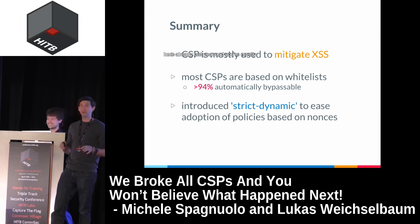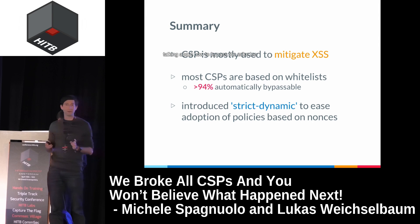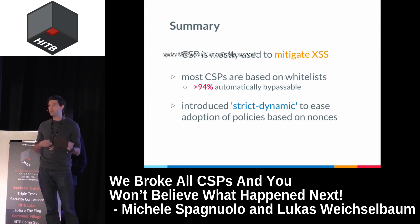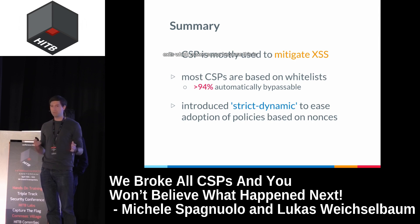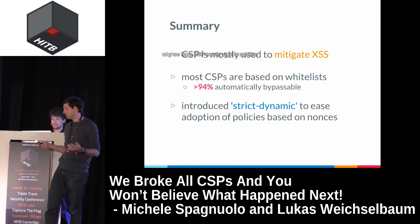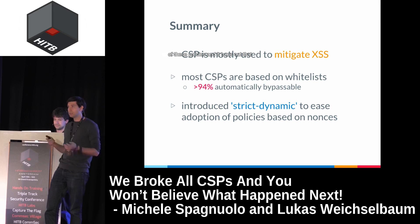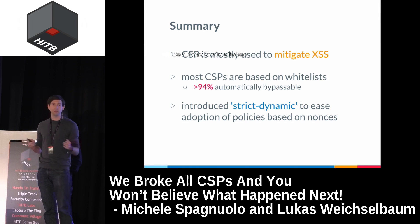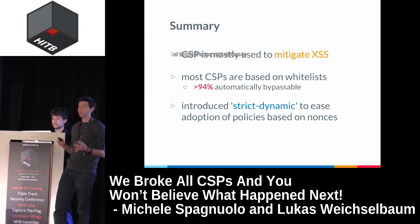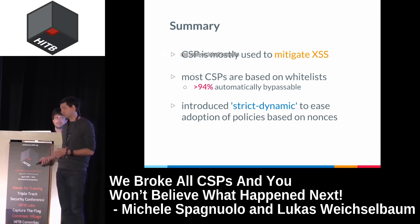We have been here already last year, mostly talking about how to bypass whitelist-based CSPs. We did pretty big research on all content security policies we could find in the Google search index. It turned out that most CSPs were used for mitigating XSS, which makes sense. We also evaluated the security of these policies, and it turns out that almost 94% of whitelist-based policies were completely bypassable automatically. Which is pretty bad — it takes a lot of time to come up with a whitelist-based policy, refactor your application, and then you get very little benefit.